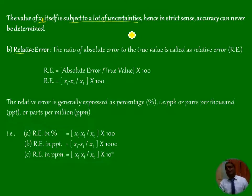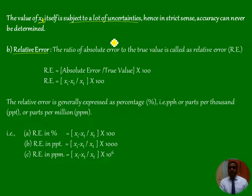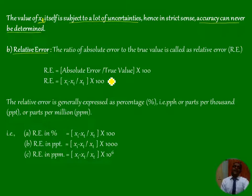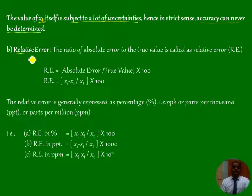In the strict sense, accuracy can never be determined, because the value Xt — the true value — is most of the time subject to uncertainty. If Xt has uncertainty, it becomes very difficult to find the accuracy correctly in the strict sense.